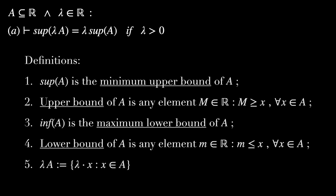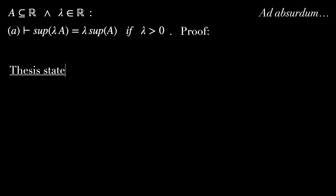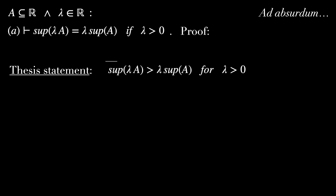Let's prove the first one by contradiction, ad absurdum. Our thesis statement is: suppose that the supremum of lambda A is not equal to, but is actually greater than, lambda times the supremum of A, for lambda greater than 0. This inequality will be denoted as star.